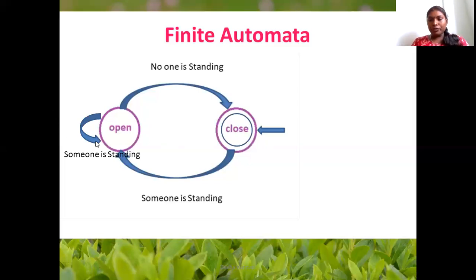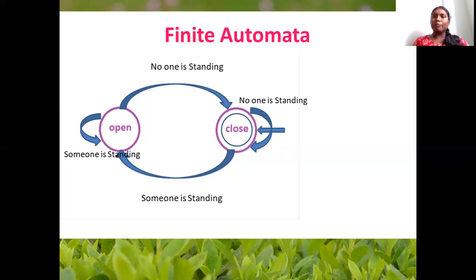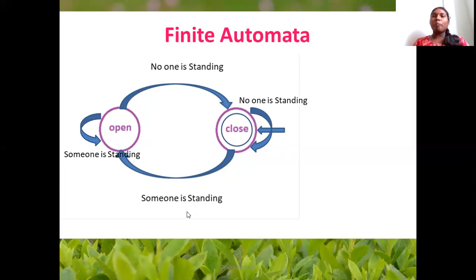In the closed state, if nobody is standing, it remains in the closed state. If anyone is standing outside, it is in the closed state. We can define a self-loop. If we define all transitions properly — a transition in open state and a transition in closed state — it is called Deterministic Finite Automator, or DFA.